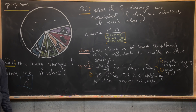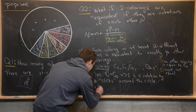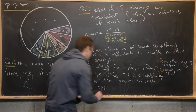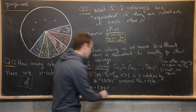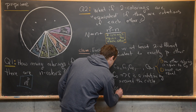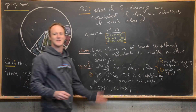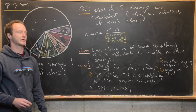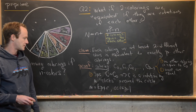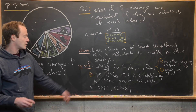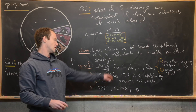Now we use the division algorithm to write M as K times P plus R, where K is a natural number and R is between zero and P minus one — that's division with remainder, the fancy term being the division algorithm.